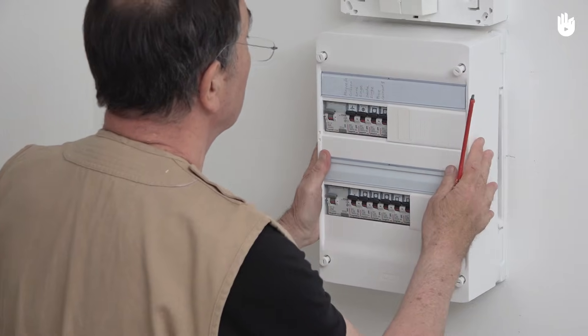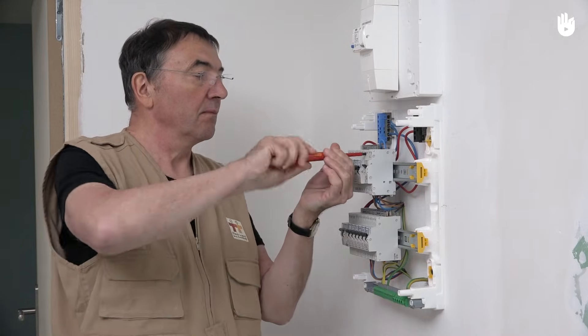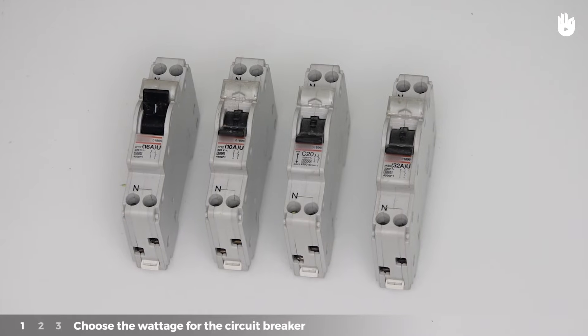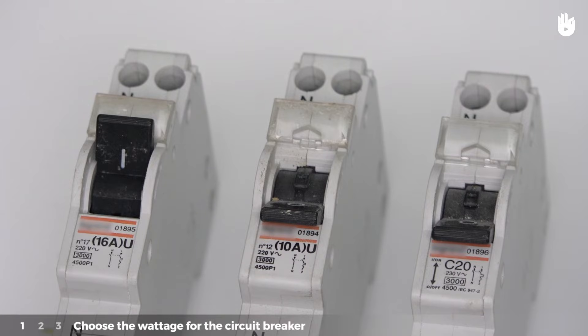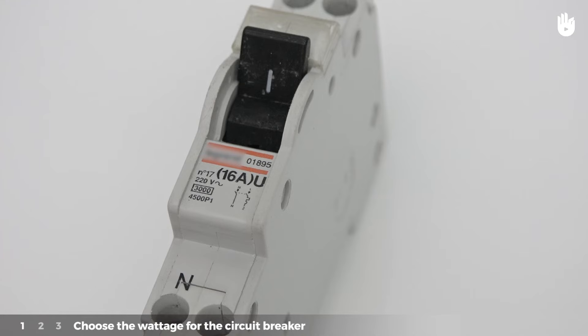This operation is carried out in three steps which we will explain here. Step one choose the wattage for the circuit breaker. The wattage choice is made in function of the appliances to be installed on the circuit. For example for a lighting circuit choose a 16 ampere circuit breaker. The circuit breaker will cover eight lights per circuit.